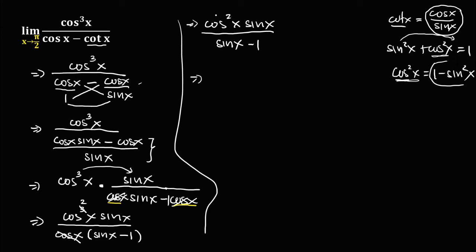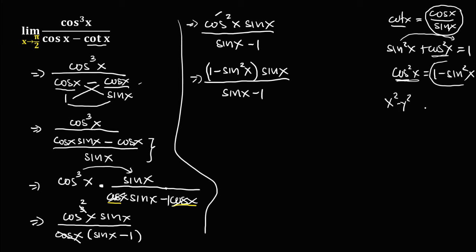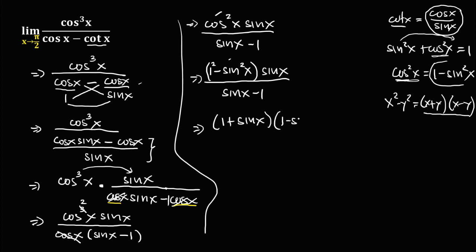We can rewrite cosine squared x as 1 minus sine squared x, so the expression becomes 1 minus sine squared x, times sine x, over sine x minus 1. Using the difference of squares identity — x squared minus y squared equals (x plus y)(x minus y) — since 1 equals 1 squared, we rewrite 1 minus sine squared x as 1 plus sine x times 1 minus sine x.